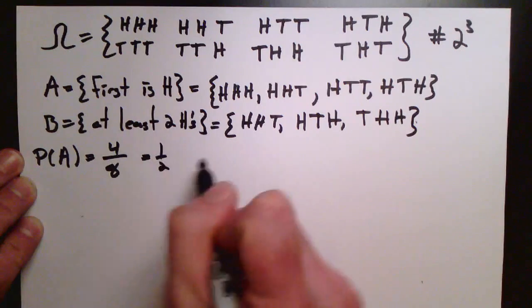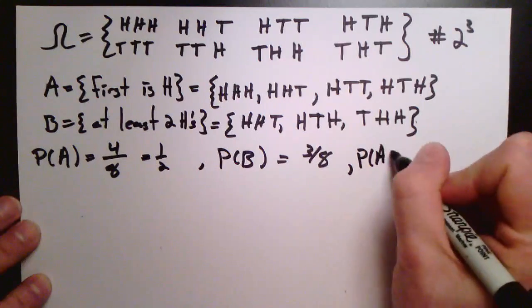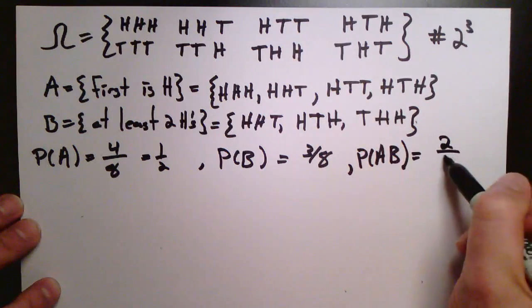So we see the probability of the first head is a head is one half. The probability of at least two heads is three eighths. That's done just by counting the number of elements there because there's a total of eight.